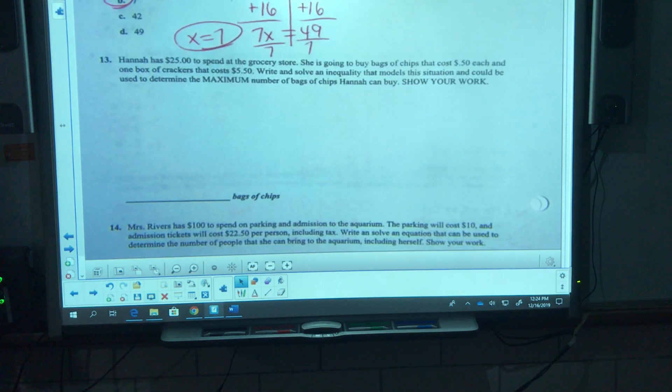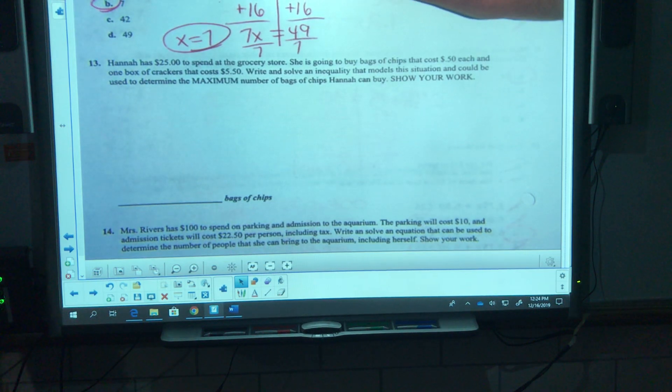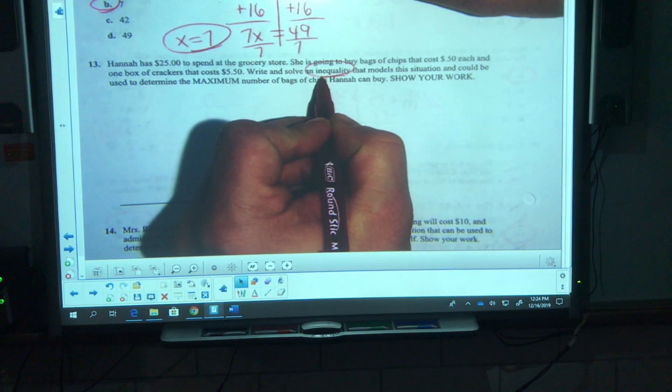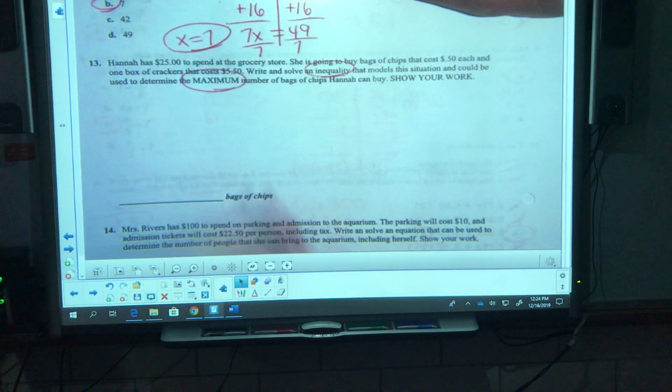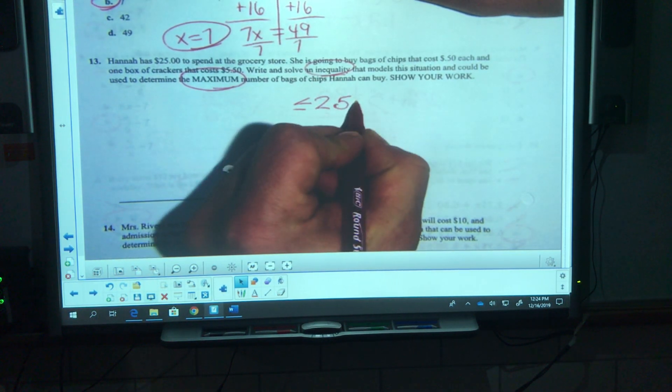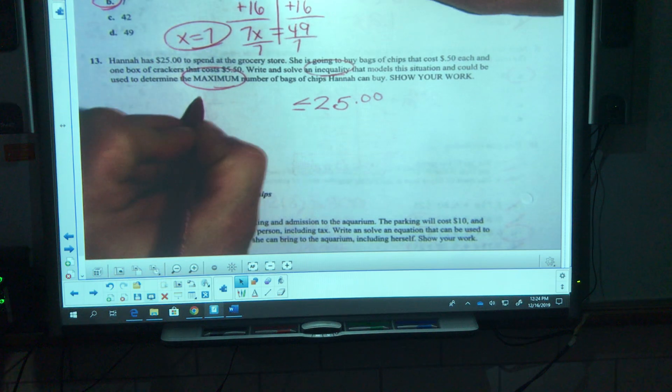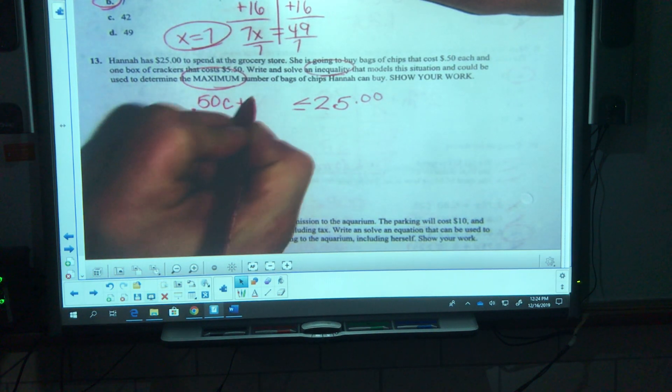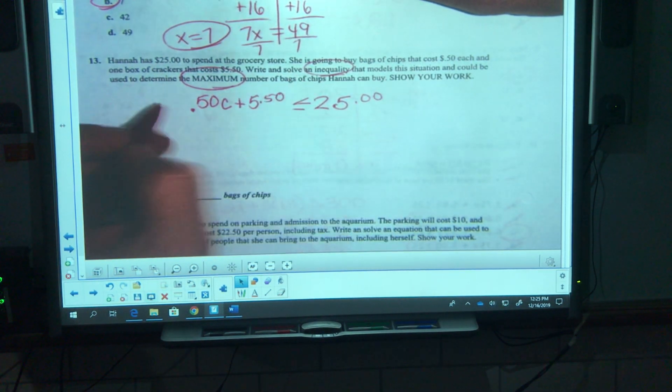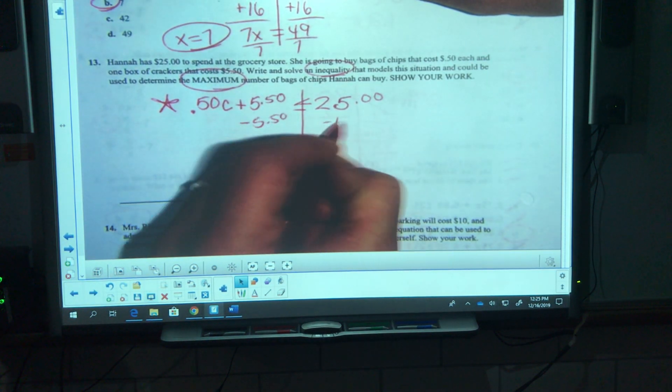Number 13, Hannah has 25 to spend at the grocery store. She's going to buy bags of chips that cost 50 cents each and a box of crackers that cost 5.50. Write and solve an inequality that can be used to determine the maximum number of bags of chips. Well, she can't go over 25 dollars, so it's gonna be less than or equal to 25. Each bag of chips is 50 cents and she's getting the crackers for 5.50.